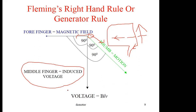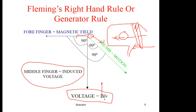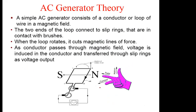The magnitude of the voltage is BLV: B will be the magnetic flux density of the field, L will be the length of the conductor crossing the magnetic field, and V will be the velocity or the speed of rotation of your conductor in the field. That gives you the magnitude of the voltage.